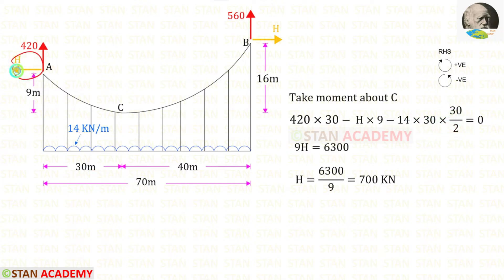With the uniformly distributed load we have to multiply the distance and distance by 2. The horizontal thrust is acting in the anticlockwise direction so it is also negative. For the horizontal thrust this is the perpendicular distance 9. Finally for H we will get 700 kN.